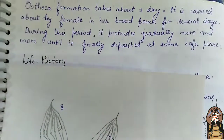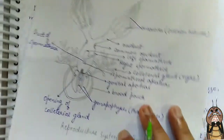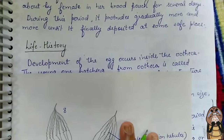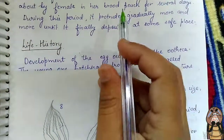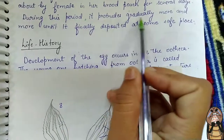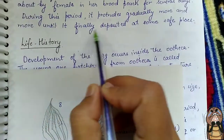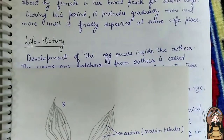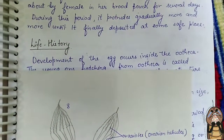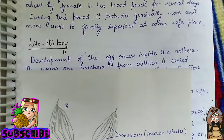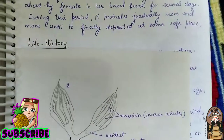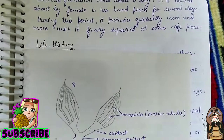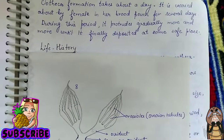The ootheca is carried about by the female in her brood pouch for several days. After some time, it gradually protrudes more and more until it is finally deposited at some safe place. This is how the copulation and formation of ootheca occurs in the cockroach.